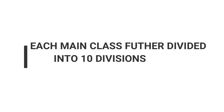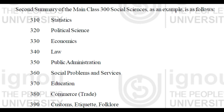Each of these 10 main classes is further divided into 10 branches called Divisions, giving a total of 100 Divisions — this is called the 2nd Summary. For example, Main Class 300 for Social Science is further divided into 10 divisions: 310 for Statistics, 320 for Political Science, 330 for Economics, and so on up to 390.